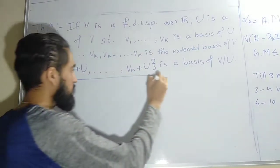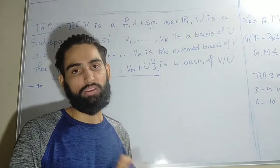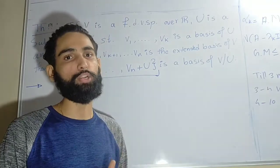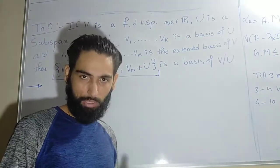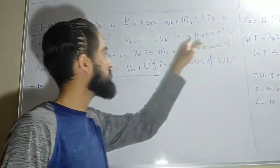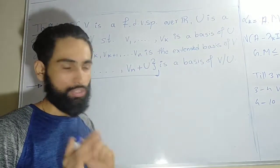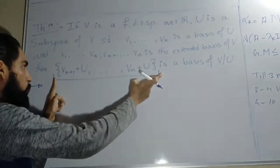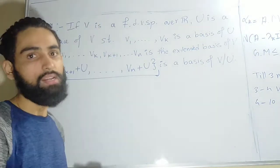Our claim is that this set is a basis of V/U. Something is a basis if and only if it is linearly independent and it spans V/U — these are two things we need to prove. We already know the dimension of V/U equals dimension of V minus dimension of U. Here, dimension of U is k and dimension of V is n, so dimension of V/U must be n minus k. You will observe there are exactly n minus k elements, so we are on the correct path.